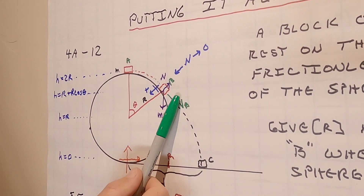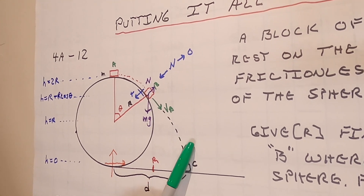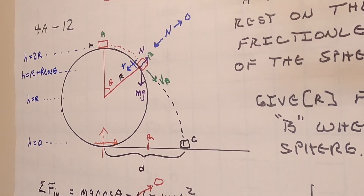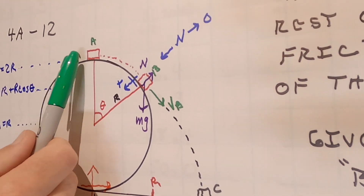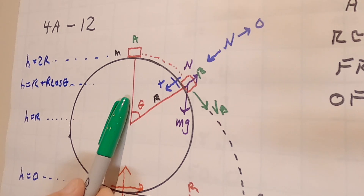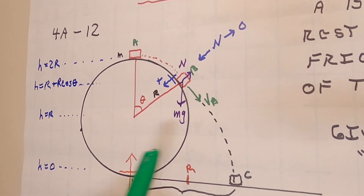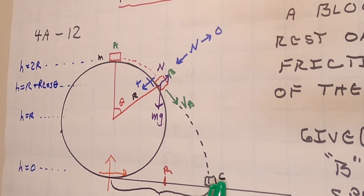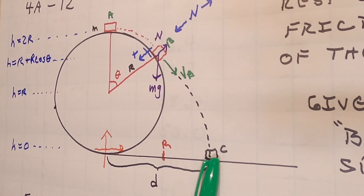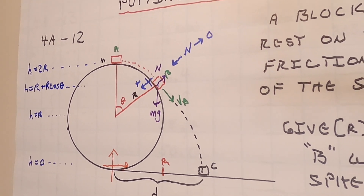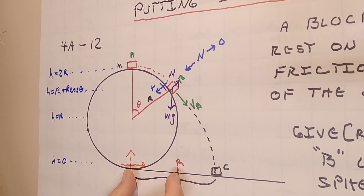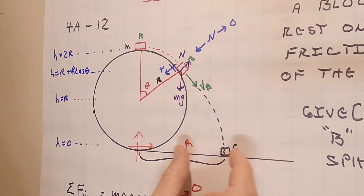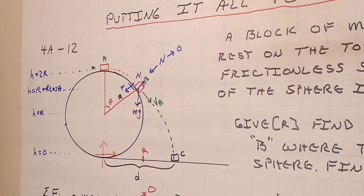Once he leaves the sphere he becomes a projectile and comes down to hit the ground. We want to calculate what angle theta is where he flies off the sphere, and where on the ground he's going to land — just in case you'd like to know where to put the mattress. It's going to be more than R from the center but less than 10R or something.